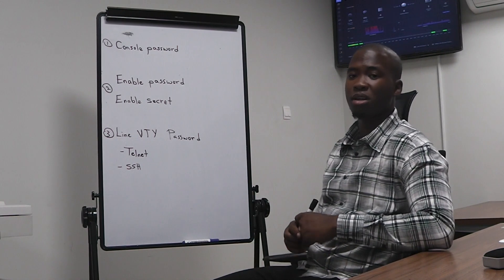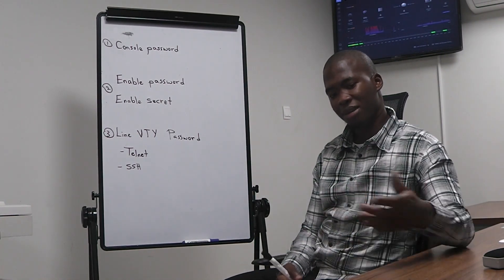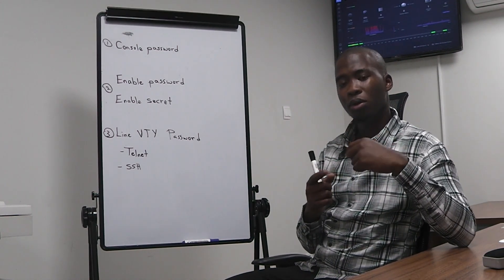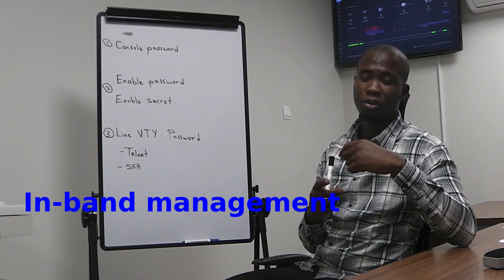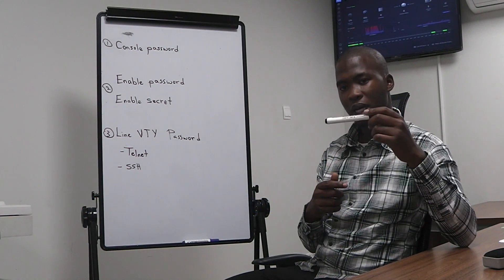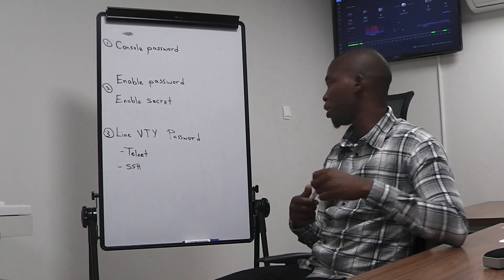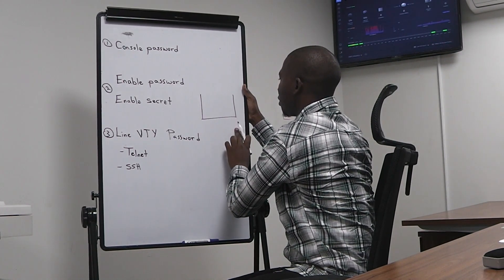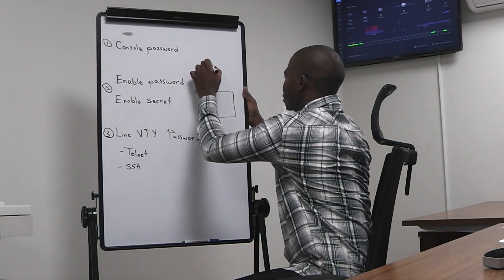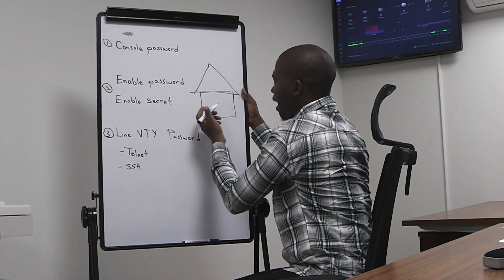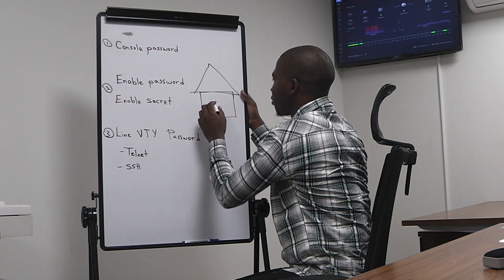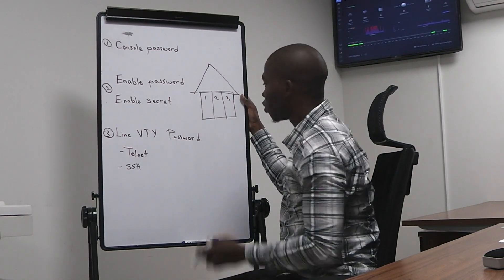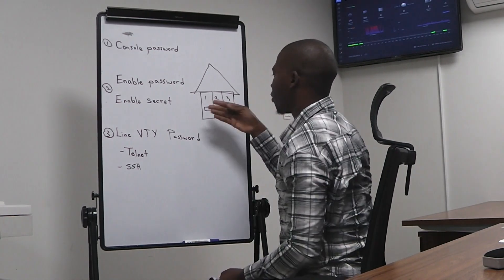The line VTY is used for remote access, meaning instead of walking to the device or connecting a console cable from your PC to the device, you can just use the network. Let's say this is a building with different partitions — partition one, two, and three — and in one room we have our switch with trunking and cables.